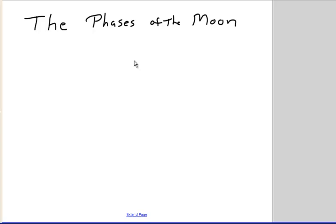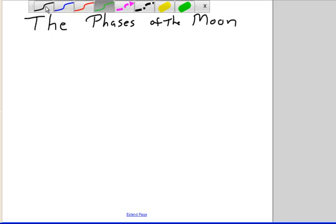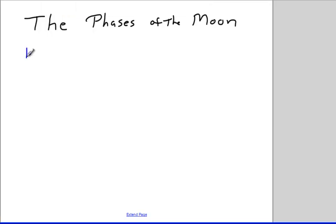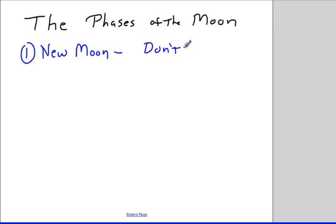What I'm going to talk about today are the phases of the moon. The phases of the moon are what we see when we look at the moon — we see a different phase depending on the position. First of all, there's the new moon, which is the one we don't see. We can't see the new moon directly because it's completely dark from our point of view — we're looking at only the dark side and nothing is illuminated.